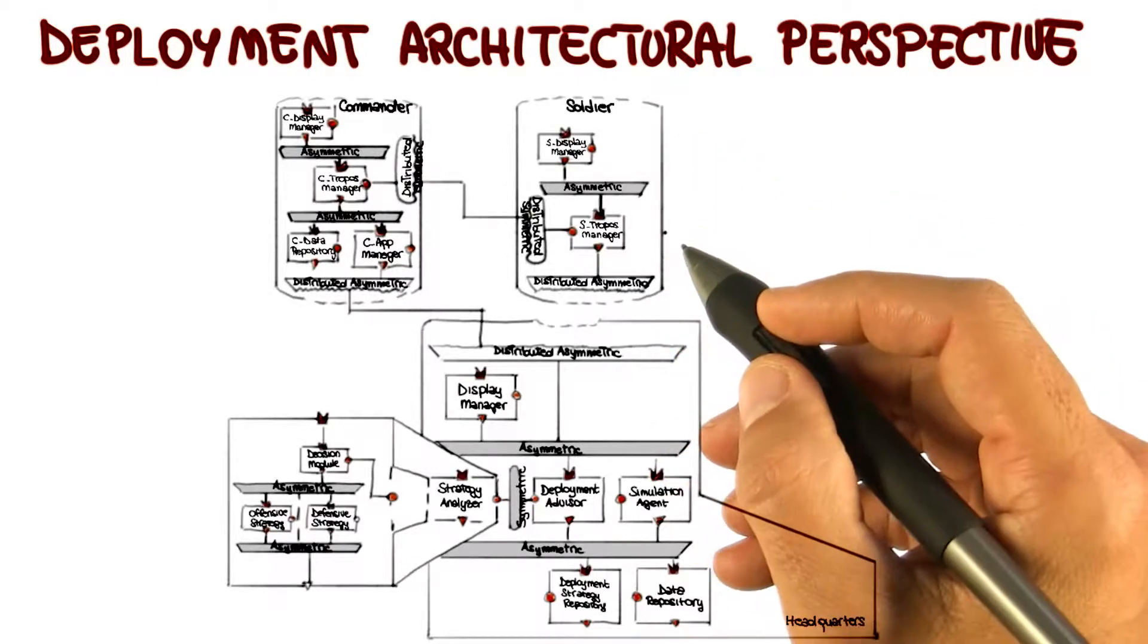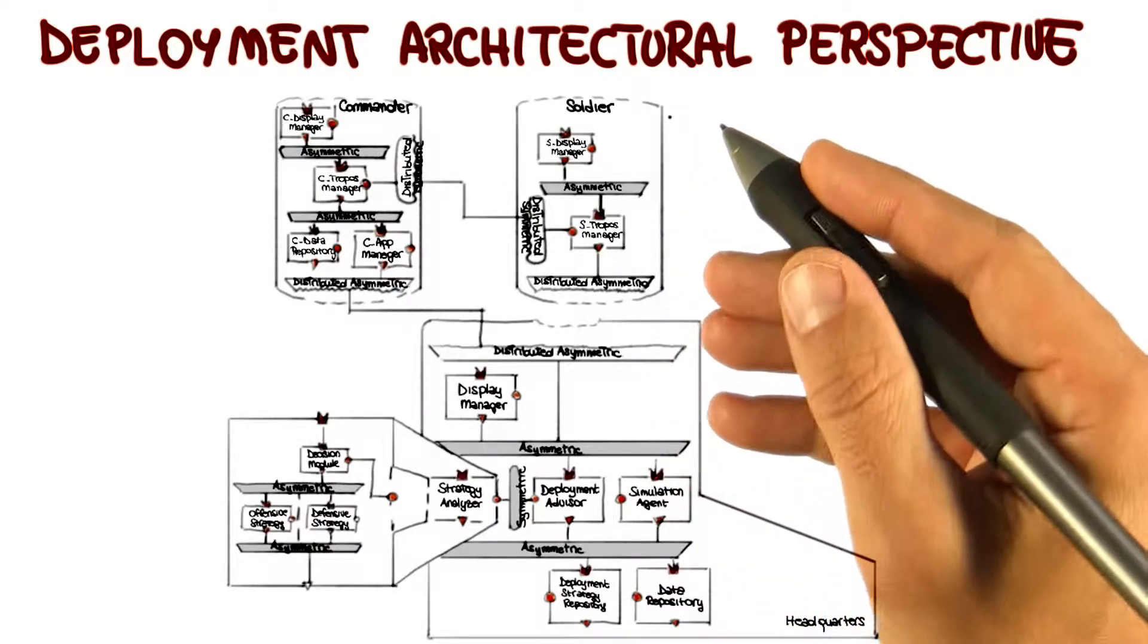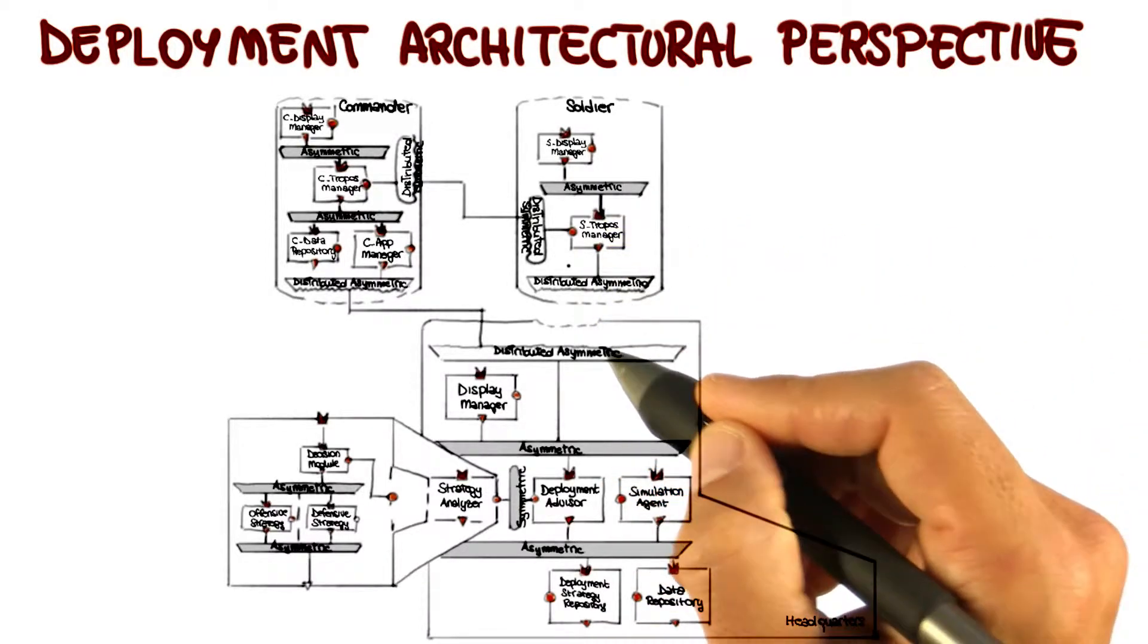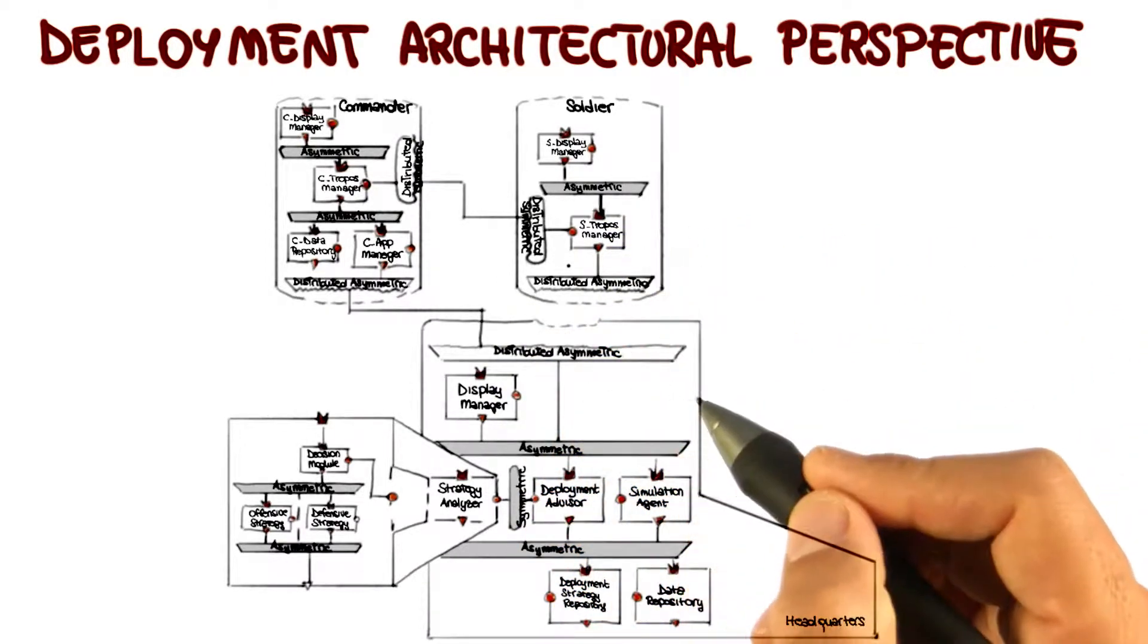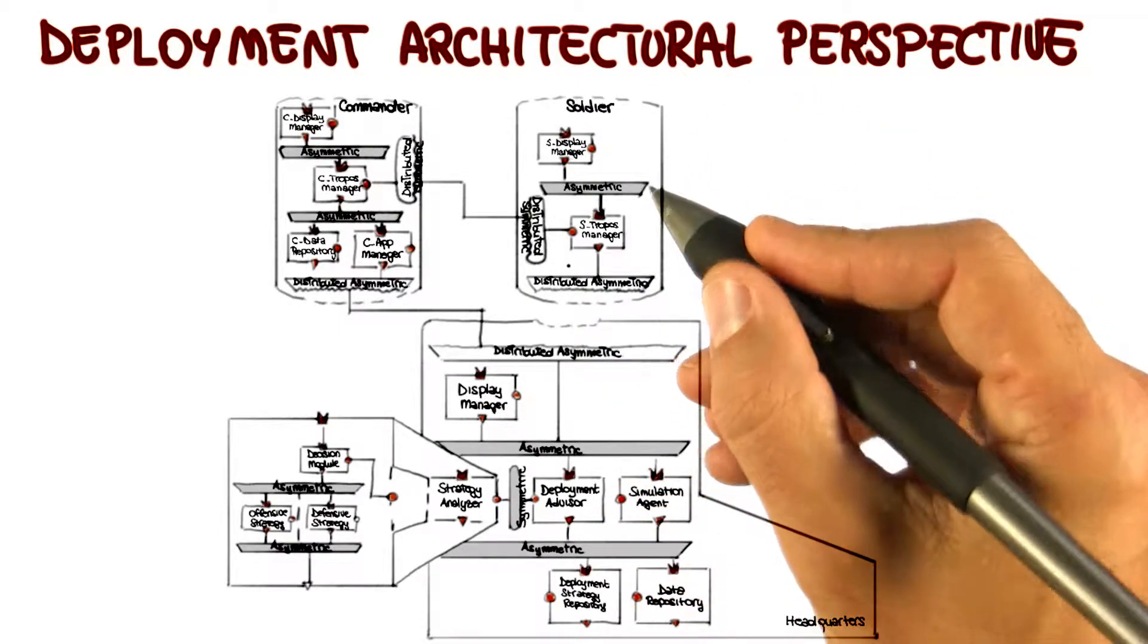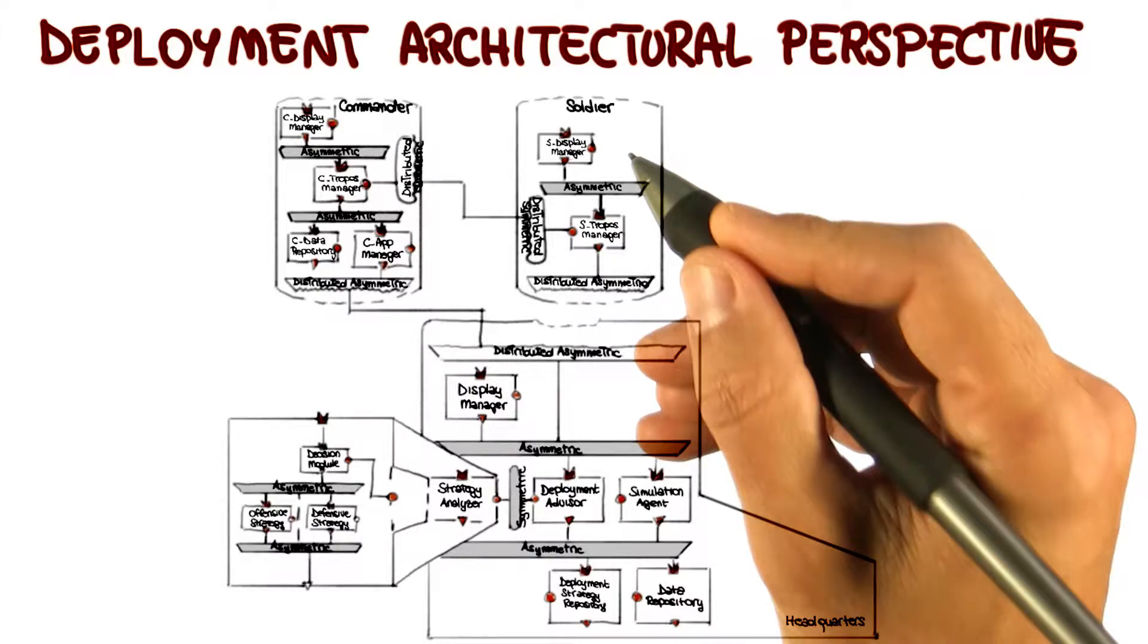A system cannot fulfill its purpose until it is deployed. And deploying a system involves physically placing the system's executable modules on the hardware devices on which they are supposed to run. So when you do that, you are basically mapping your components and connectors to specific hardware elements.